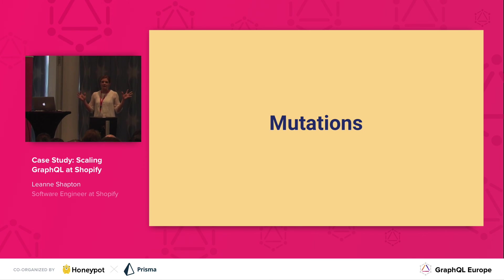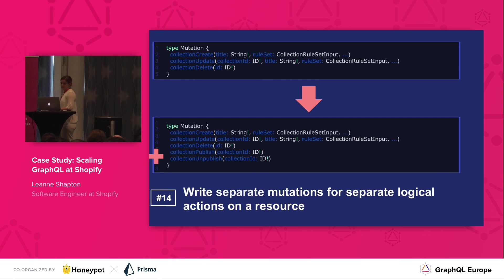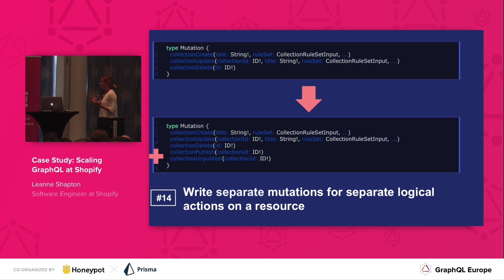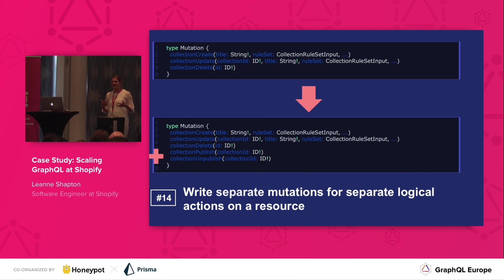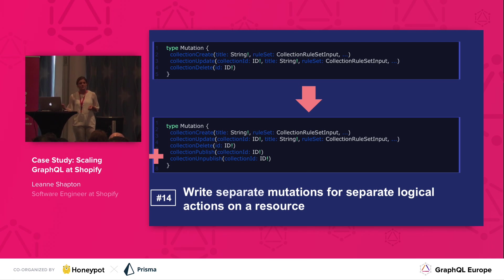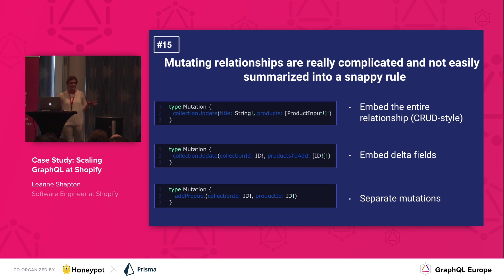Our schema right now is missing mutations. If we blindly design our mutations like we do in REST-based APIs, we'll notice that our update mutation becomes quite large quite quickly — because it's responsible for not just updating things like the title but also publishing and unpublishing products. This is hard for the server to implement and also hard for the client to reason about. So we can take advantage of the power of GraphQL and write separate mutations for separate logical actions on a resource. We have collection update for updating the title, but also collection publish and collection unpublish when you want to publish or unpublish a product to a particular collection. We don't have to follow CRUD.